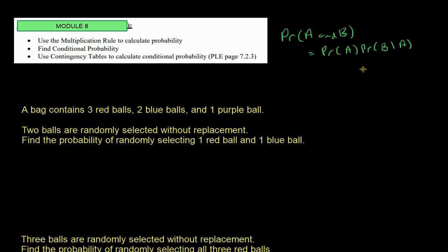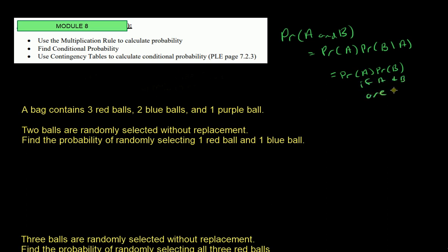If A and B are independent, meaning B does not depend on A, then it's just the product of the two: probability of A times the probability of B.